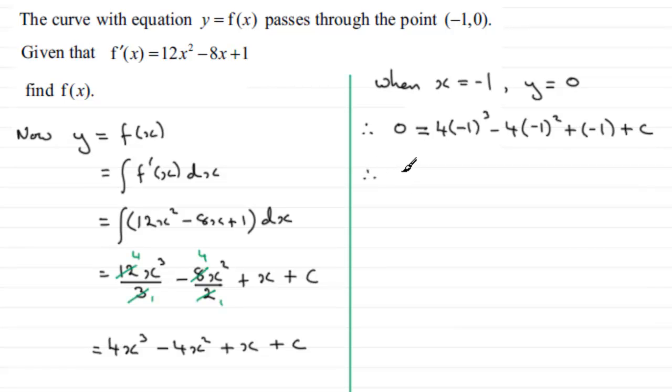So if we work this out, we've got -1 cubed is -1, times it with 4 that's going to be -4. -1 squared is 1, times it with -4, it's going to be -4.